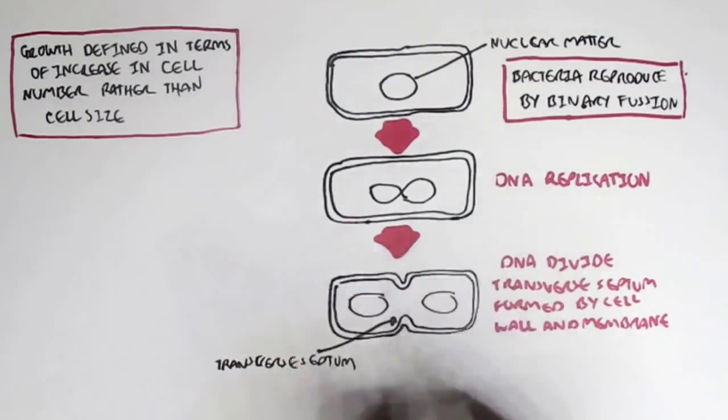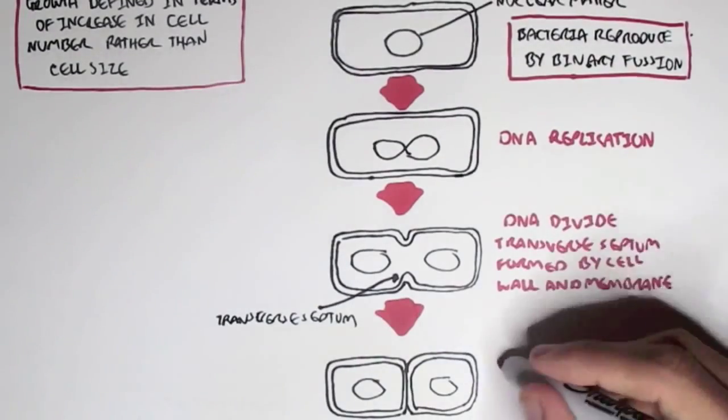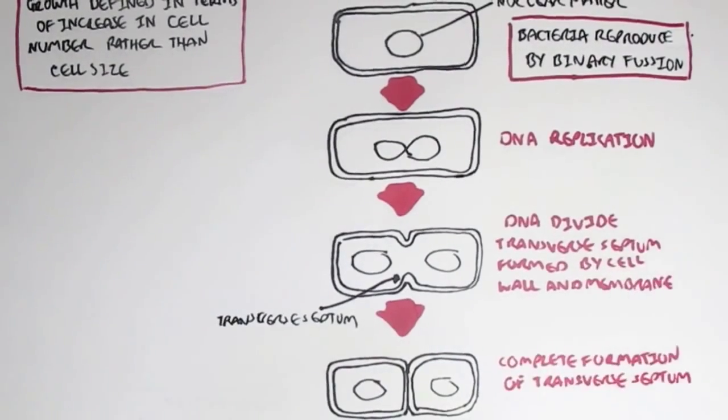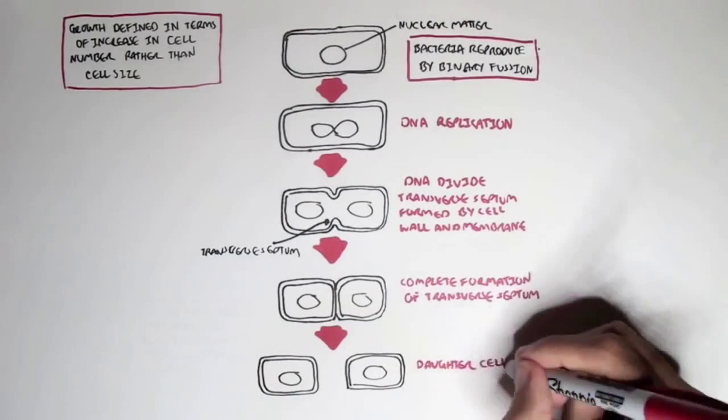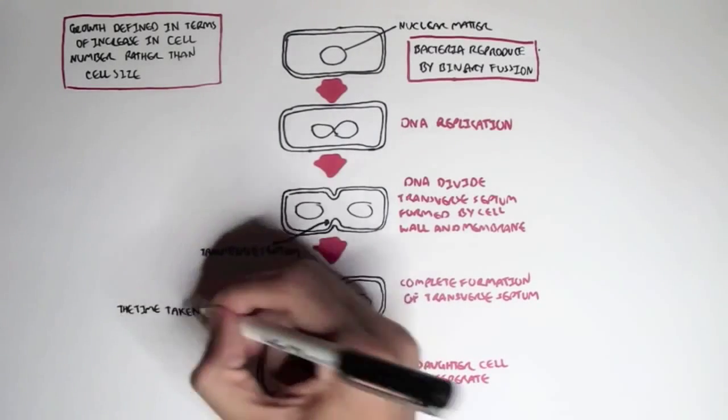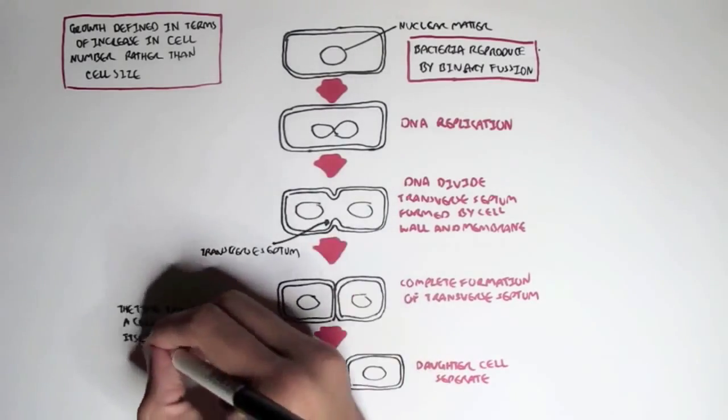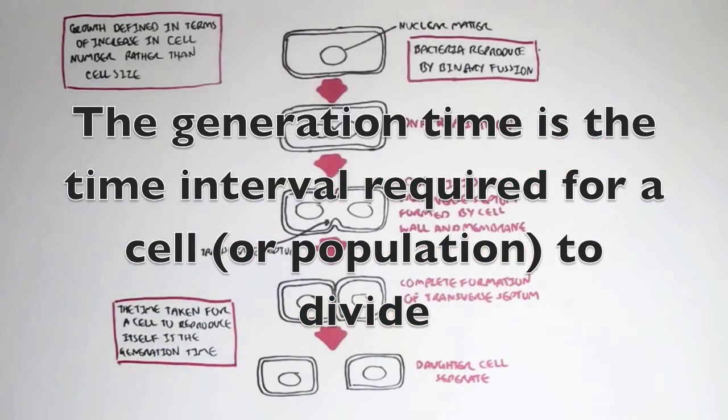And then after some time, a transverse septum will be completely formed which will enable the daughter cells, these two cells, to separate now. So now we have two bacteria cells. And that completes binary fusion, how the bacteria reproduces itself. Now the time taken for a cell, the bacteria, to reproduce itself is called the generation time. And this can vary depending on the type of organism and the environment conditions.